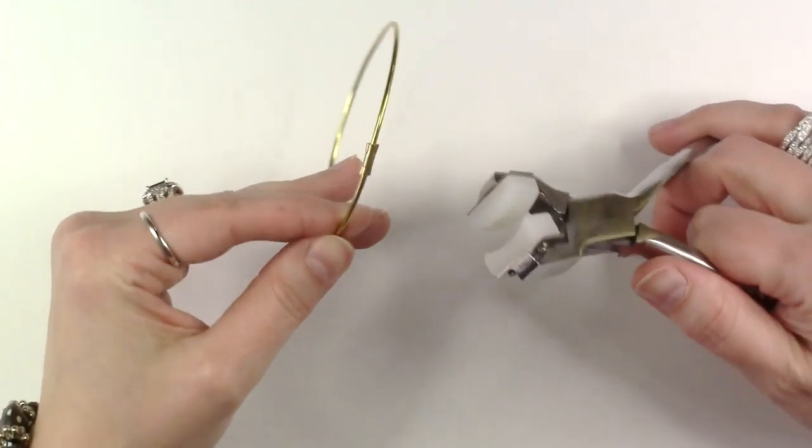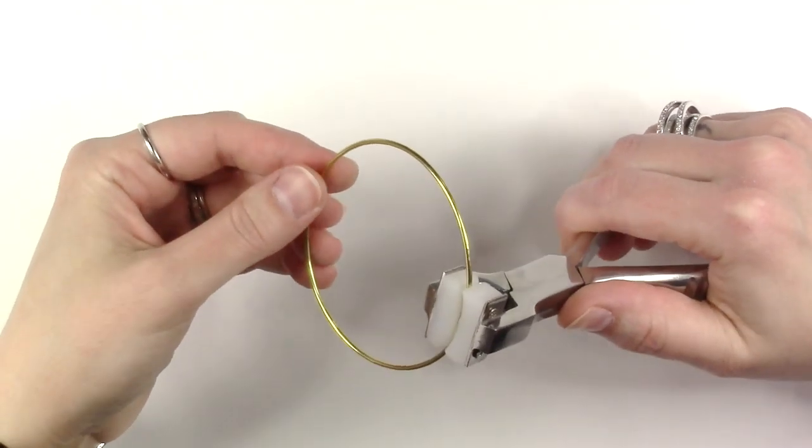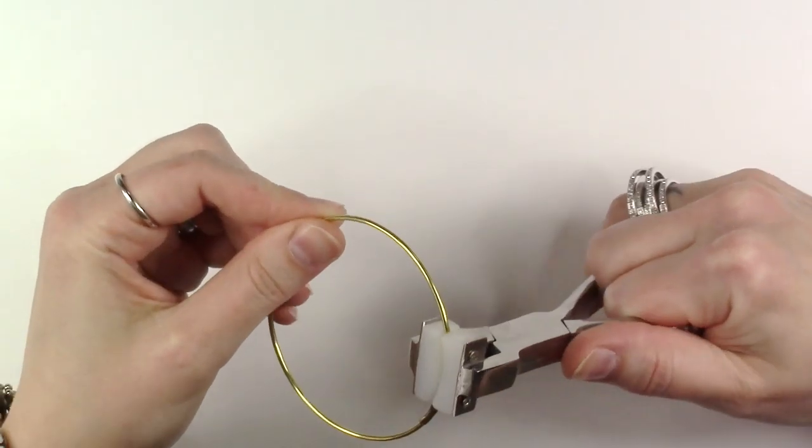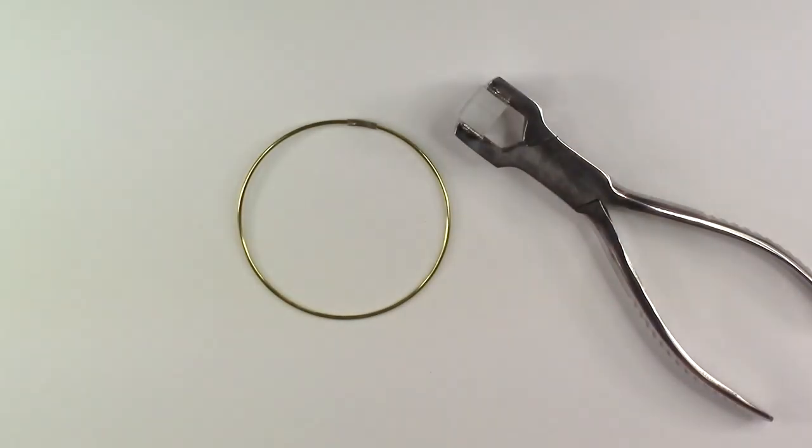Place the bangle bracelet back into the bracelet bending pliers starting where the crimp connector is on the bangle and reform your round shape for your bangle. And your bangle bracelet is complete.